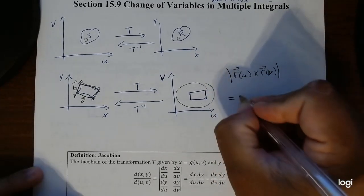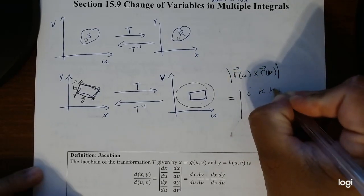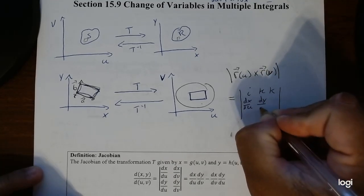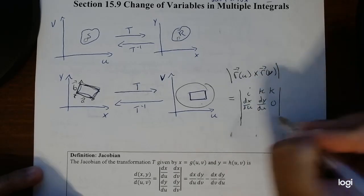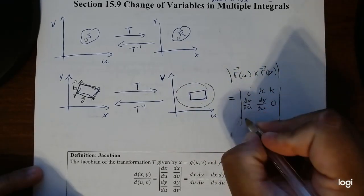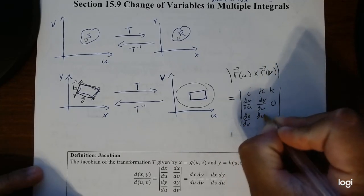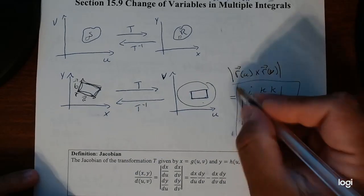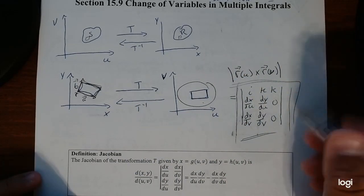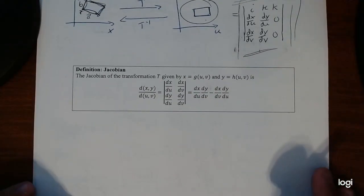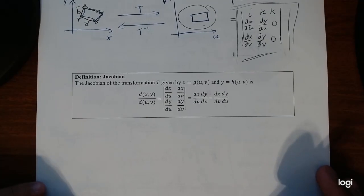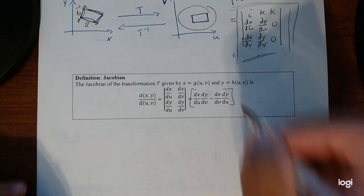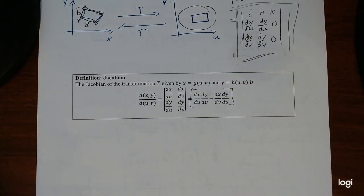When we take the magnitude of the cross product — just as a reminder — the derivative with respect to u gives dx/du and dy/du, and since there's no z value, those terms are zero. This cross product determinant is something called the Jacobian, which gives the cross product of this portion.